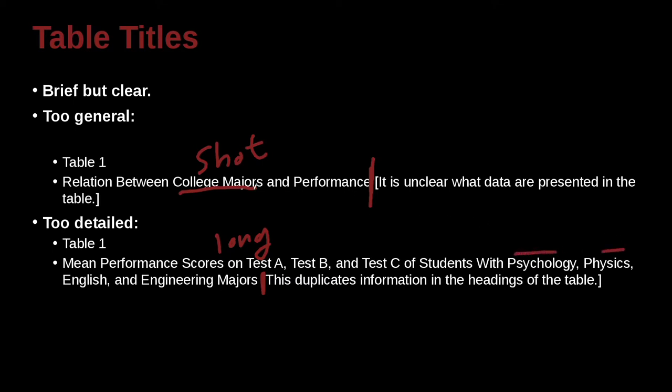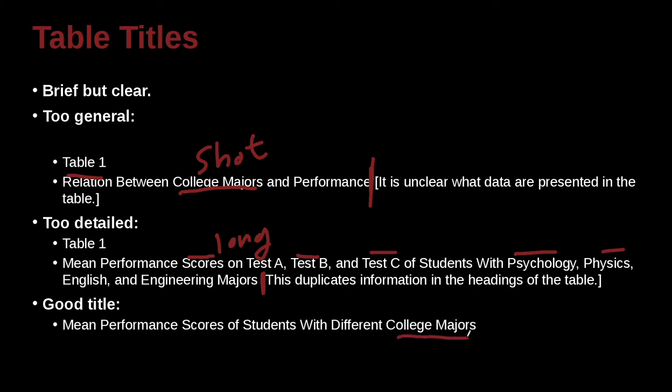This one here talks about a relation, but this one down here actually tells you relation of scores between test A, test B, test C. So these are two extreme examples. A good compromise would be in the middle, something like this: Mean performance scores of students with different college majors. So we do mention majors, but we don't say what the majors are. We do say that it's measuring the mean and the performance scores of the subjects who are students.